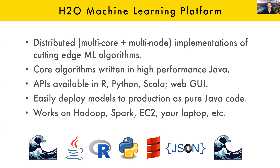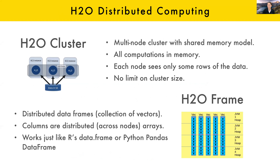Just a few terms we have in H2O that are useful to know about. We have something called the H2O cluster — that's our name for the shared Java process where everything is happening. That's where all the models are trained and all your data lives in memory. The first thing you do when you use H2O is start up an H2O cluster, either on a single node or across an actual physical cluster. Then we have something called an H2O frame, which is basically a distributed data frame. When you're working with it in R and Python, it's really seamless.